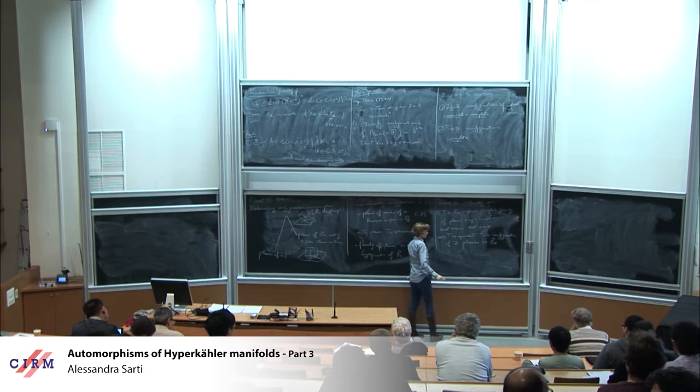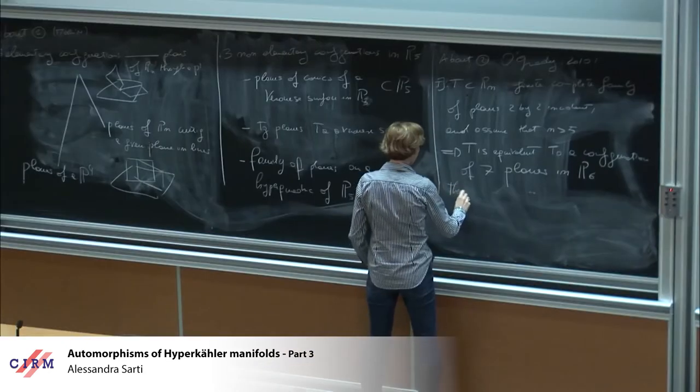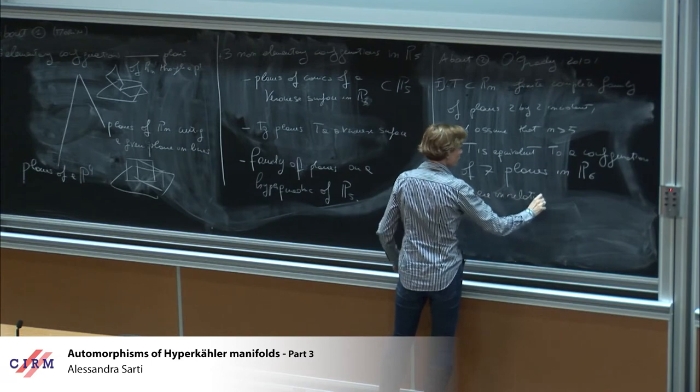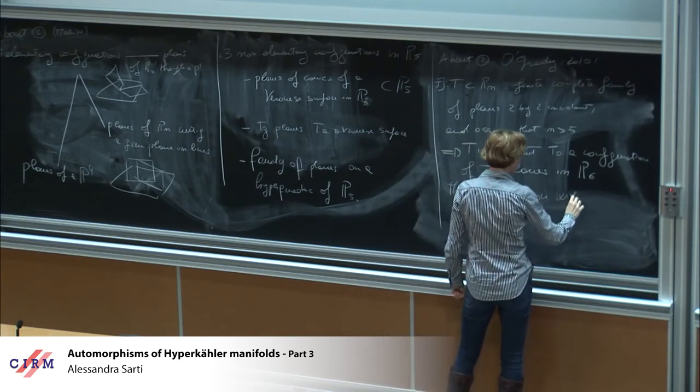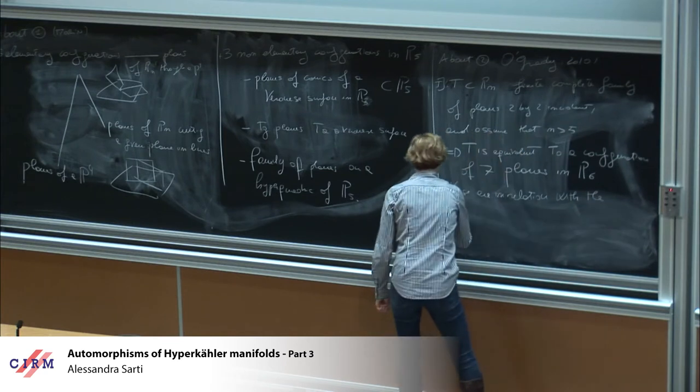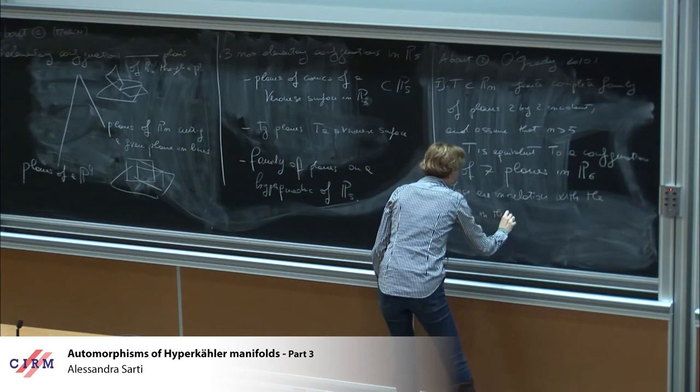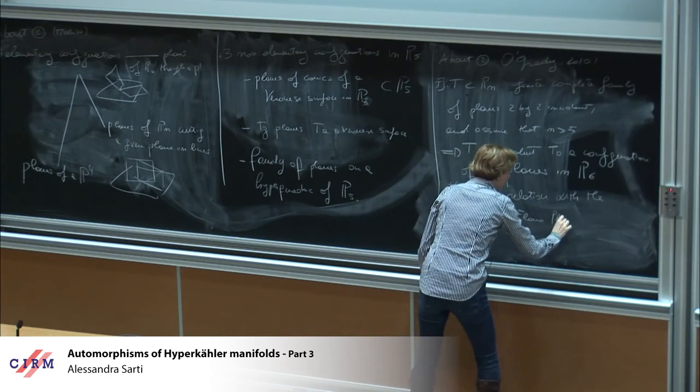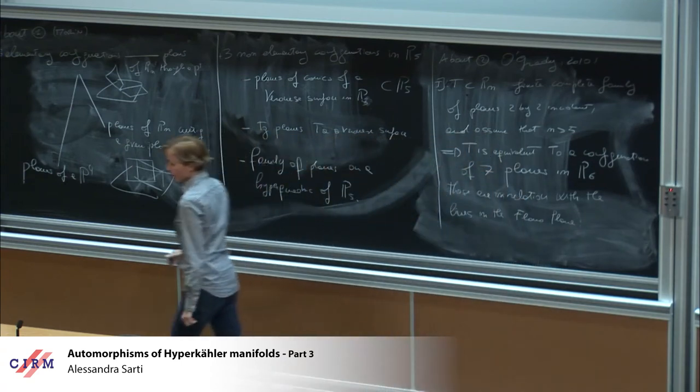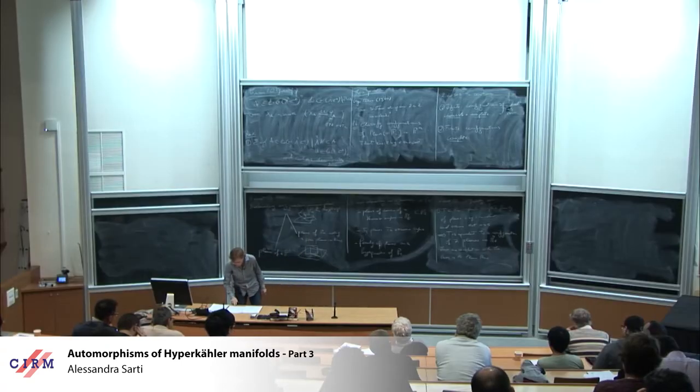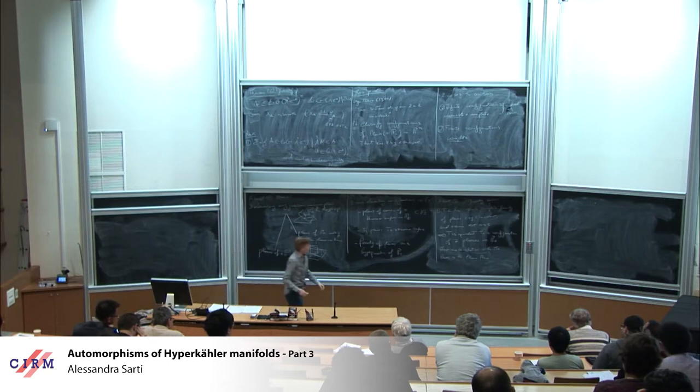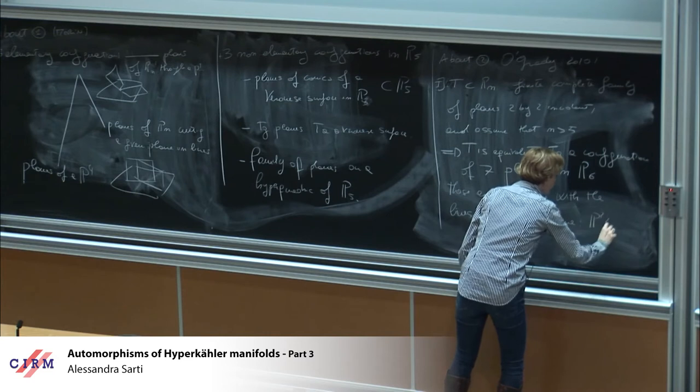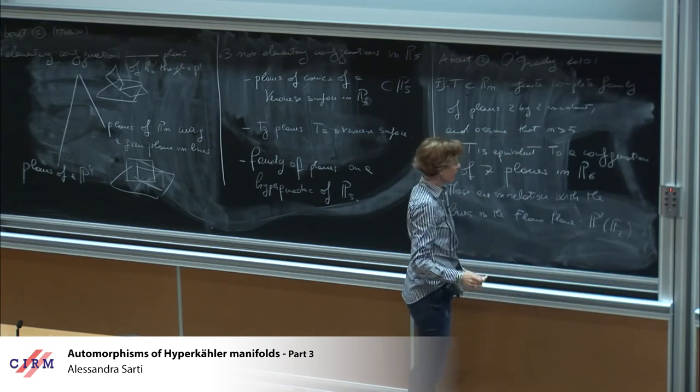So take T in Pn, complete finite family of planes, always two by two incident. And assume that N is strictly bigger than 5. Then T is equivalent to a configuration of seven planes in P6. And these seven planes are in relation with the lines in the Fano plane.